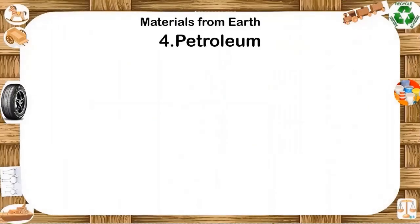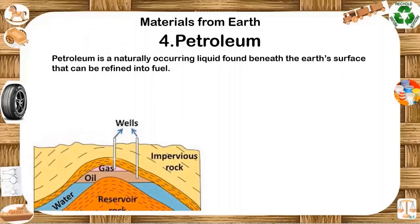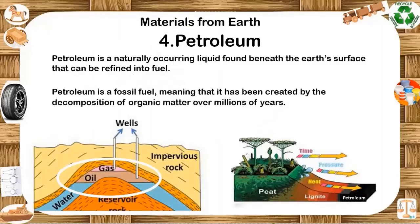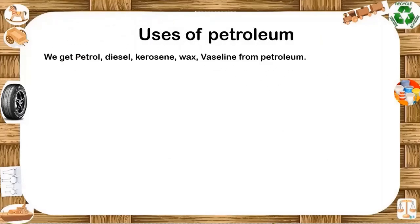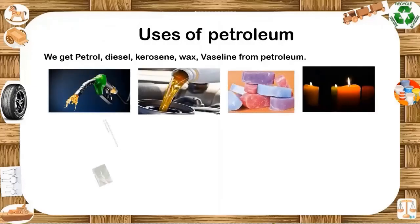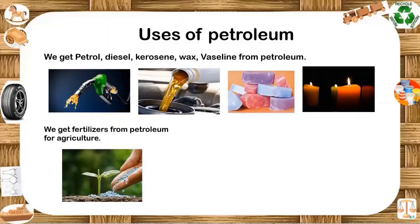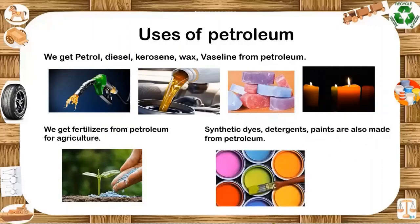Petroleum is a naturally occurring liquid found beneath the earth's surface that can be refined into fuel. Petroleum is a fossil fuel, meaning it is created by the decomposition of organic matter over millions of years. Uses of petroleum: we get petrol, diesel, kerosene, wax and vaseline from petroleum. We get fertilizers from petroleum for agriculture. Synthetic dyes, detergents and paints are also made from petroleum.